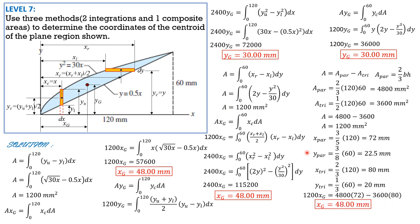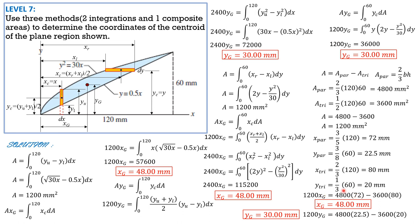Applying Varignon's theorem: net area 1,200 times x_G equals area of parabola times x of parabola minus area of triangle times x of triangle. So 1,200 x_G equals 4,800 times 72 minus 3,600 times 80. Solving for x_G, x_G is 48 mm. Then 1,200 y_G equals 4,800 times 22.5 minus 3,600 times 20, so y_G is 30 mm. I presented three ways; mastering even one is enough.